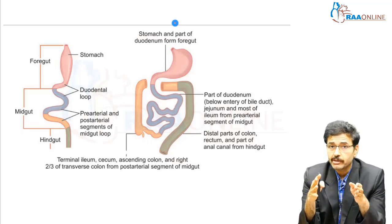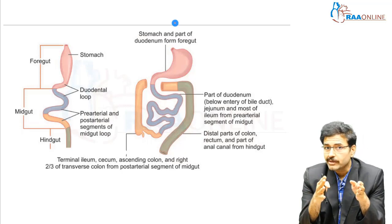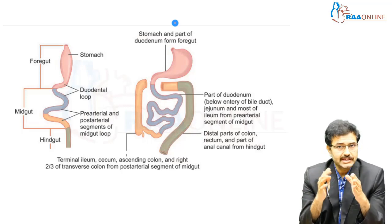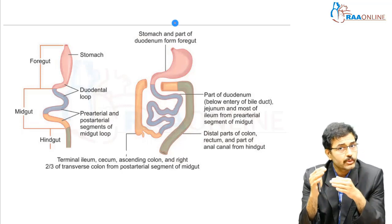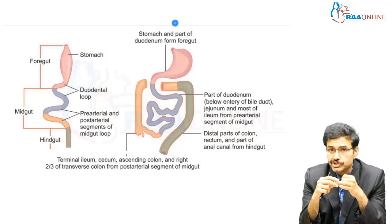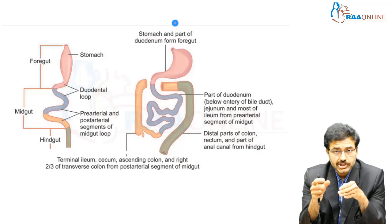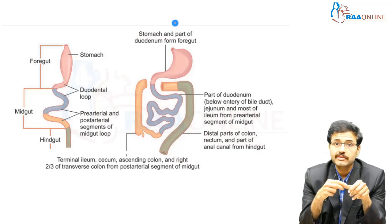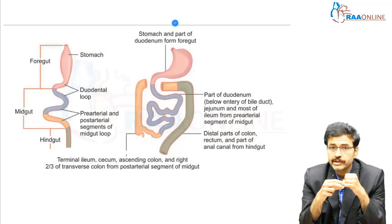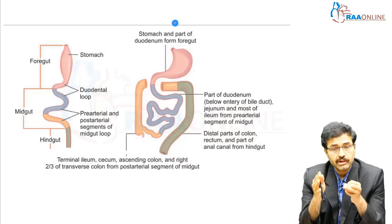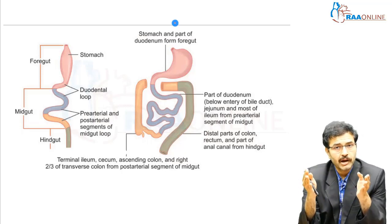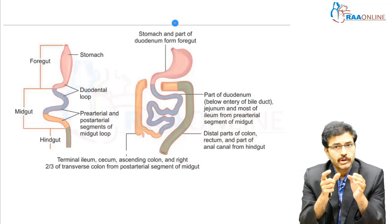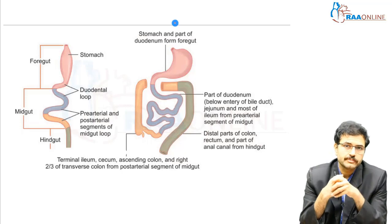Today we will be discussing about the midgut in particular. The midgut itself gives rise to part of the duodenum below the ampulla of Vater, the jejunum, the ileum, the ileocecal junction, cecum, the ascending colon, and a portion of the transverse colon — specifically the right two-thirds of the transverse colon.